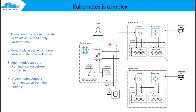Kubernetes is complex, but the way we implement it requires thorough forecasting. Everything in Kubernetes communicates via the API server mechanism and the desired state. The control plane is the overall control, actively enforcing instructions. The etcd will always hold the state with the help of agents. Agent nodes support communication between containers, and also support communication from the internet — for example, if we expose any application through ingress.